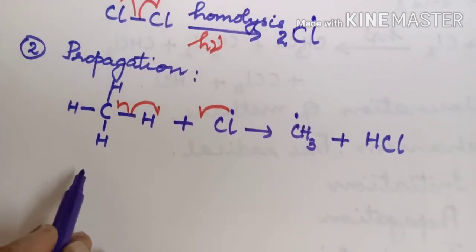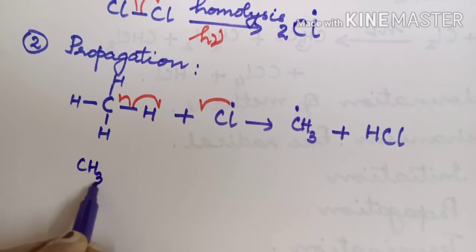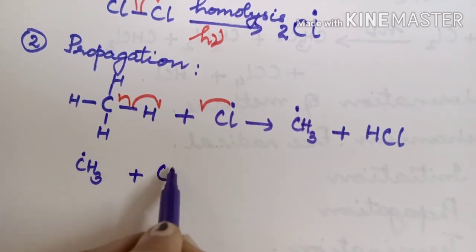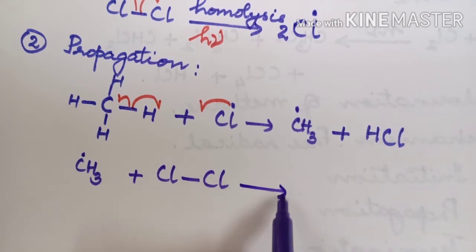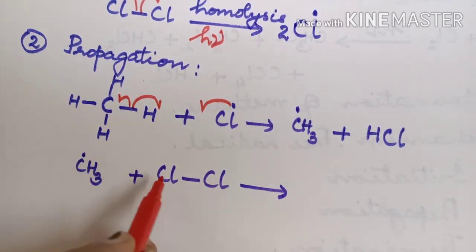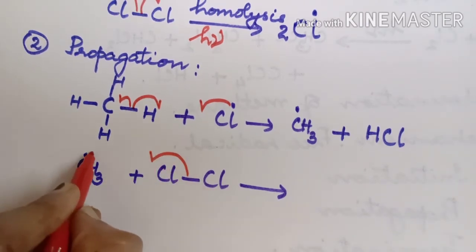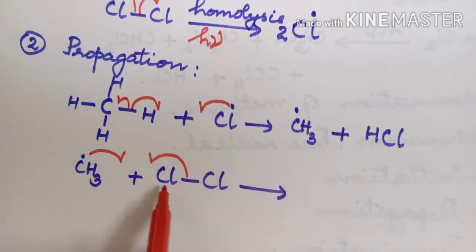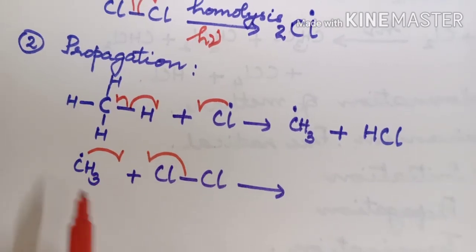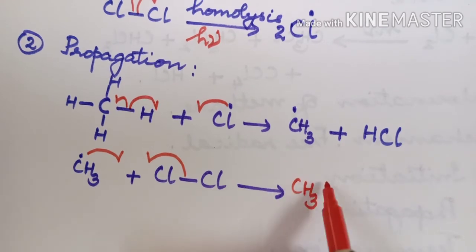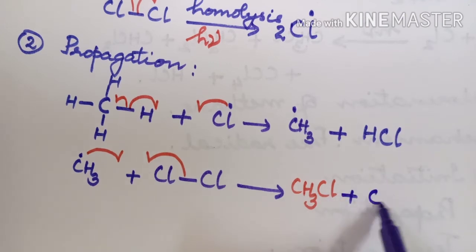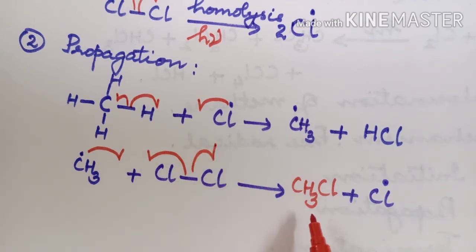The methyl free radical that is produced will attack a new chlorine molecule. The covalent bond of Cl2 breaks; the chlorine combines with the carbon to form CH3Cl. So one product is obtained. Along with that, another Cl radical is released. This Cl radical further attacks the next C-H bond of CH3Cl.